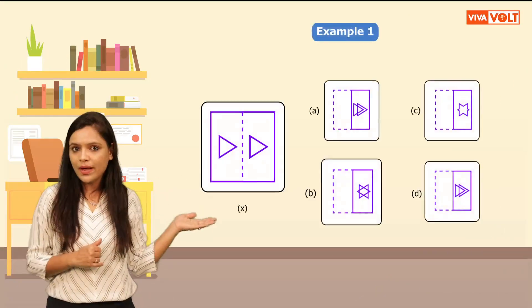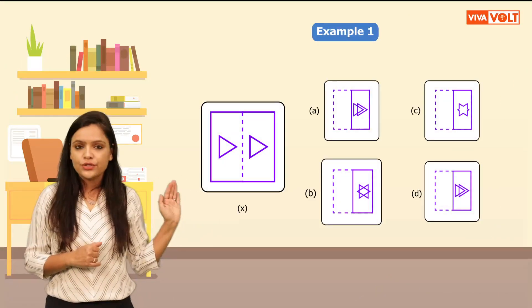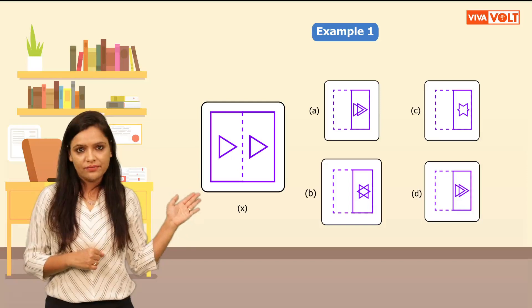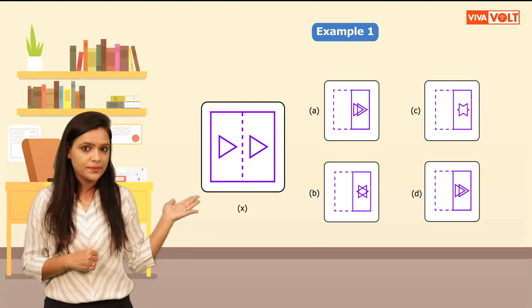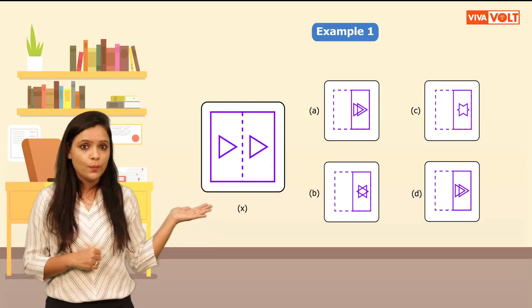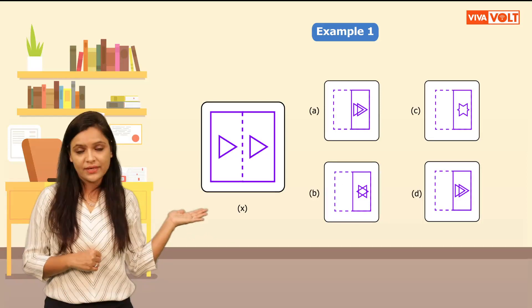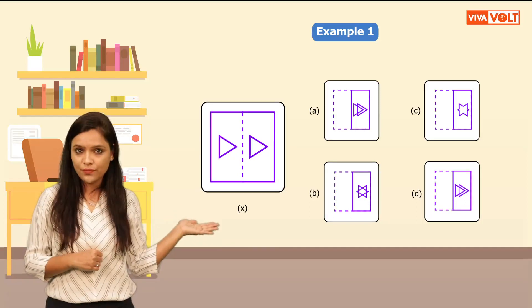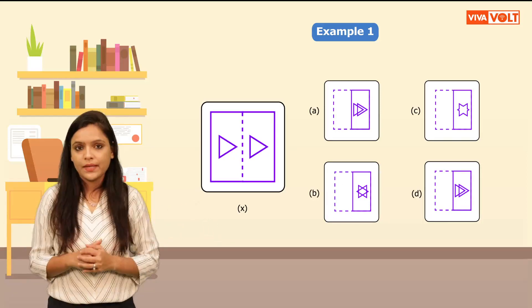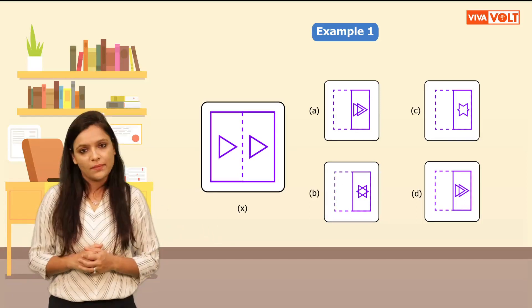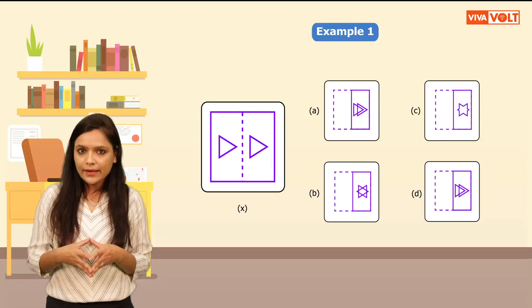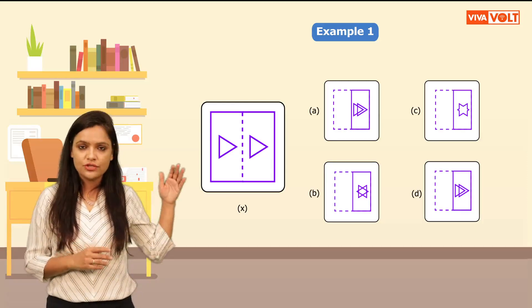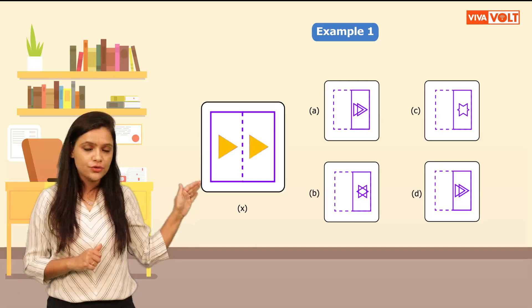Let's look at some examples. Example one: choose the correct figure from the given options that will be obtained when the paper shown as figure X is folded. Look at the options on the screen. Here we have a transparent paper and two triangles are present on both sides of the dotted line.